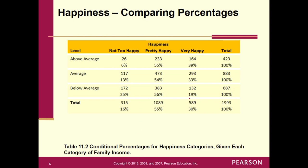For instance, if your family had a below-average income, what percentage was very happy? It looks like it's 19%. How many were pretty happy? 56%. How many were not too happy? 25%.